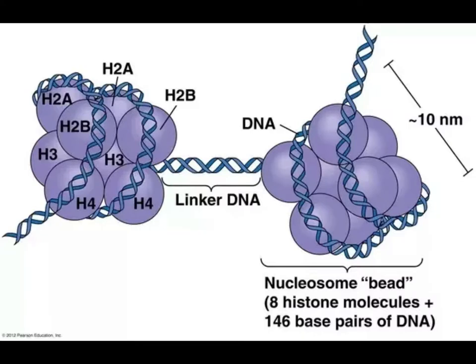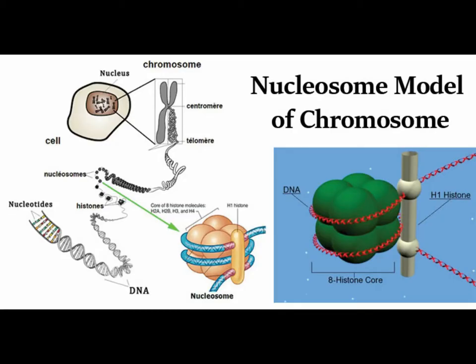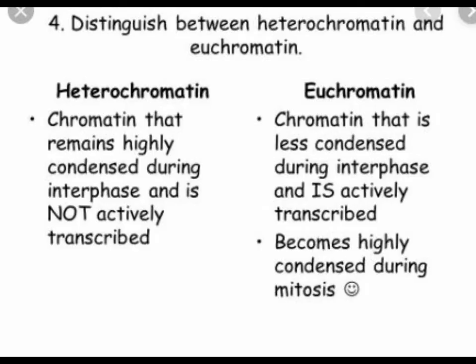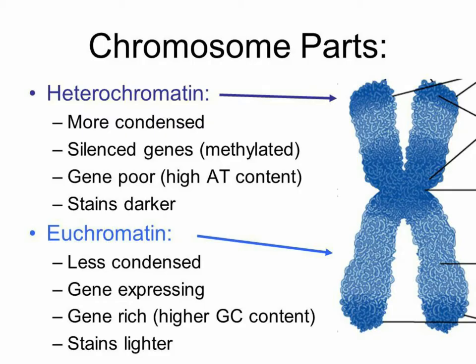Highly condensed portions of the chromatin are called heterochromatin. Some of these portions remain permanently condensed, so their DNA is never expressed. The remainder of the chromosome, called euchromatin, is condensed during cell division, when compact packing facilitates the movement of chromosomes.